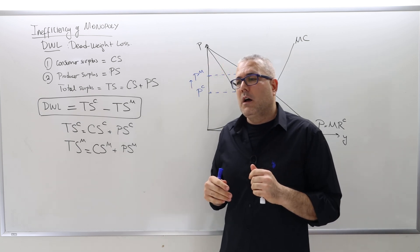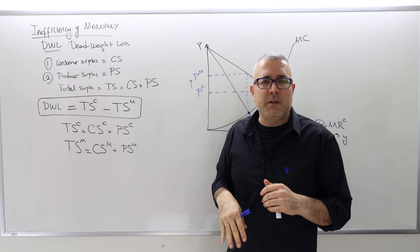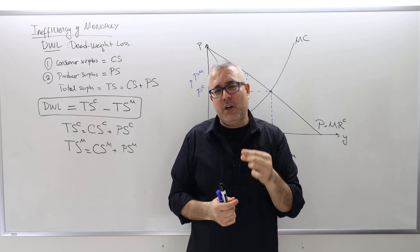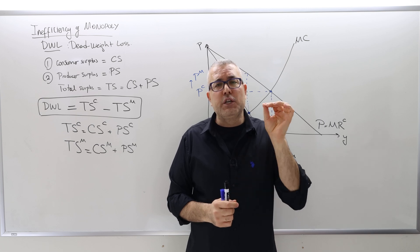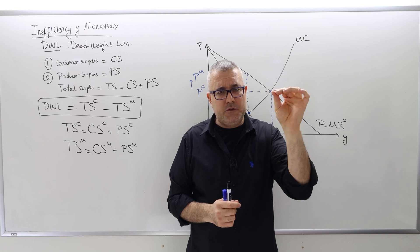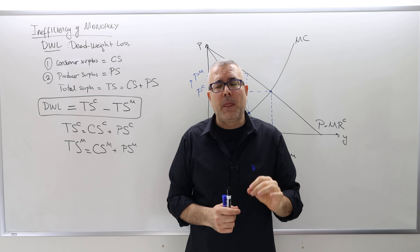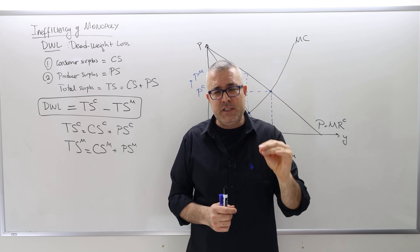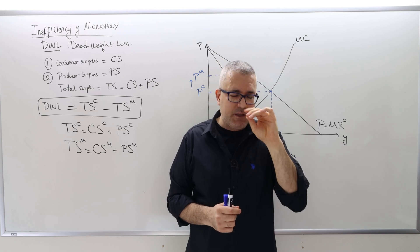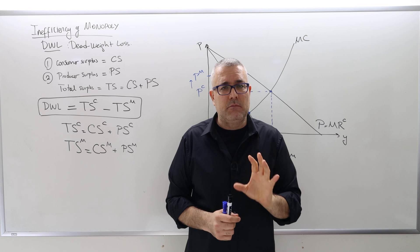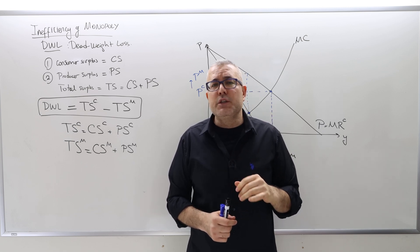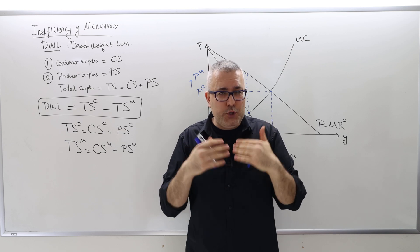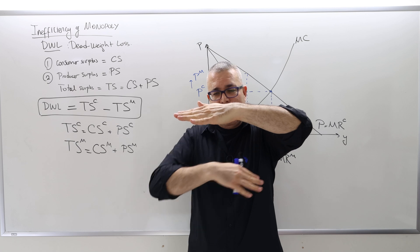What is consumer surplus? Whether it's competitive or monopolist, the consumer surplus is basically the difference between the consumer's willingness to pay and the actual price they pay. The producer surplus is the difference between the actual price the seller receives minus the price that the sellers are willing to sell. Therefore, the consumer surplus is always the area between the demand curve and the price line, and the producer surplus is the area between the price line and the supply curve.